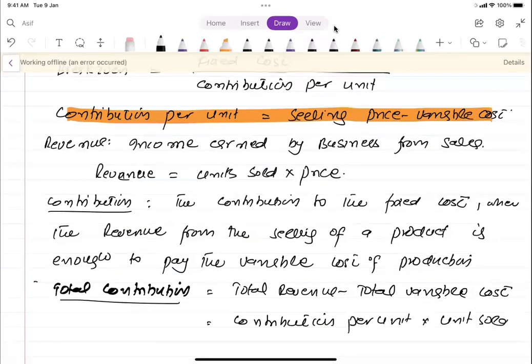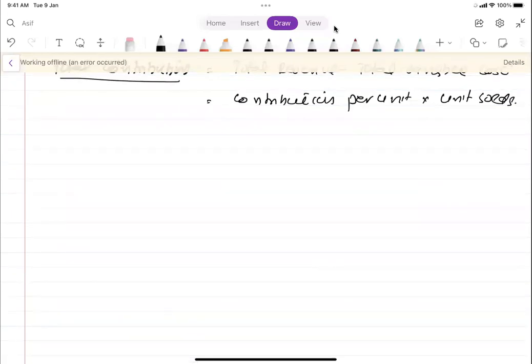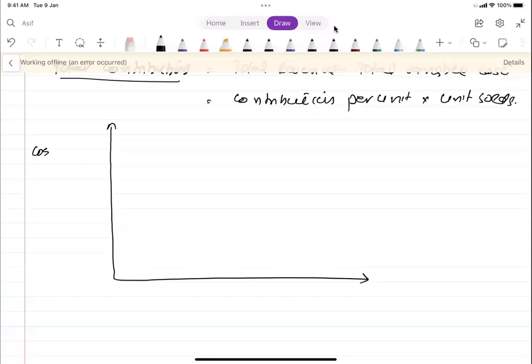These are different concepts used in break-even. We need to learn how the break-even chart is drawn. For this, we need to learn about a few lines. This is a graph: on the y-axis costs are drawn, on the x-axis the units or output is drawn.